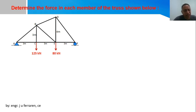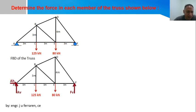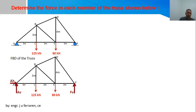The pin support carries both vertical and horizontal reactions, while the roller can only have a vertical reaction. So we have three unknown reactive forces, and since we also have three equations of equilibrium, this is a determinate structure and we can solve for the reactions.